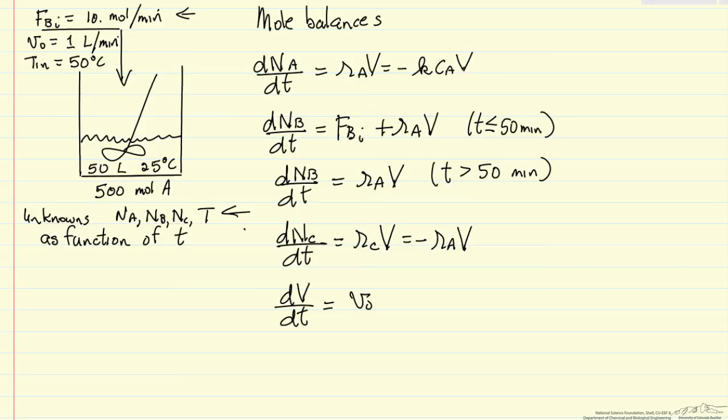We need initial conditions for these differential equations. The number of moles of A initially is 500. The number of moles of B initially is 0. Likewise, the number of moles of C initially is 0. And the volume initially is 50 liters.